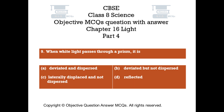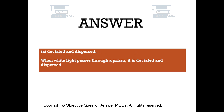Question number 9. When white light passes through a prism, it is: Option A deviated and dispersed. Option B deviated but not dispersed. Option C laterally displaced and not dispersed. Option D reflected. The right answer is option A: deviated and dispersed. When white light passes through a prism, it is deviated and dispersed.